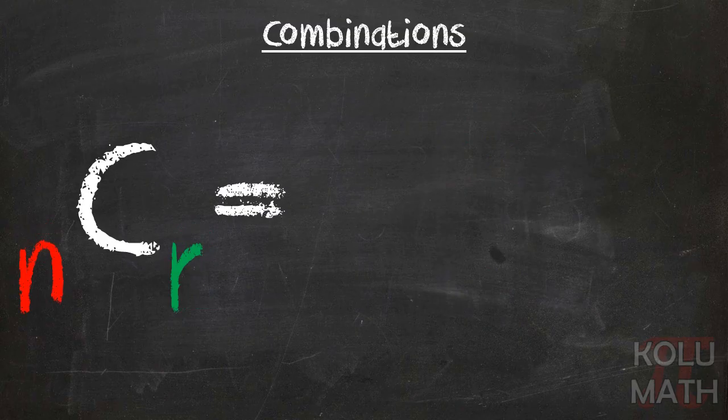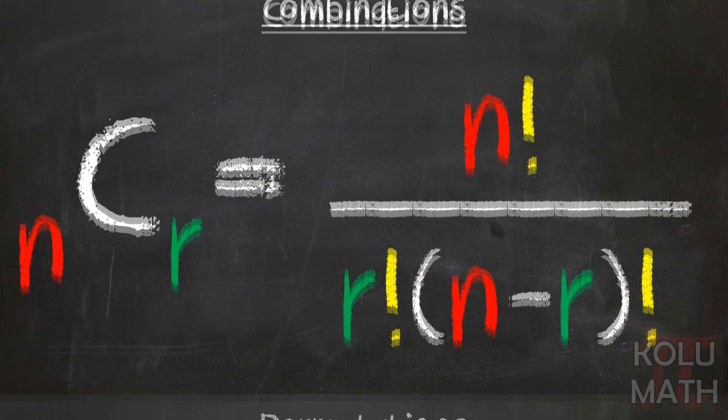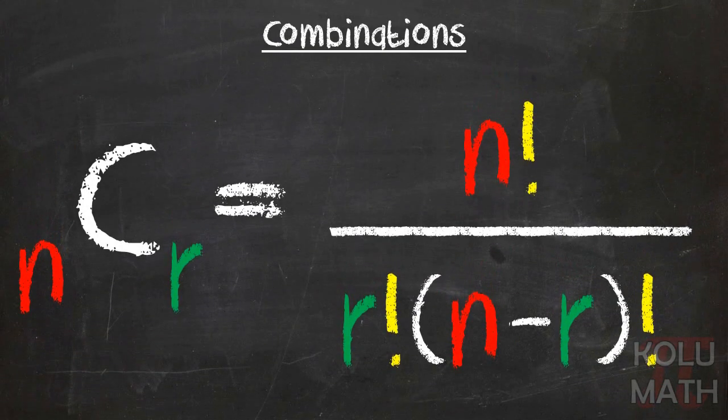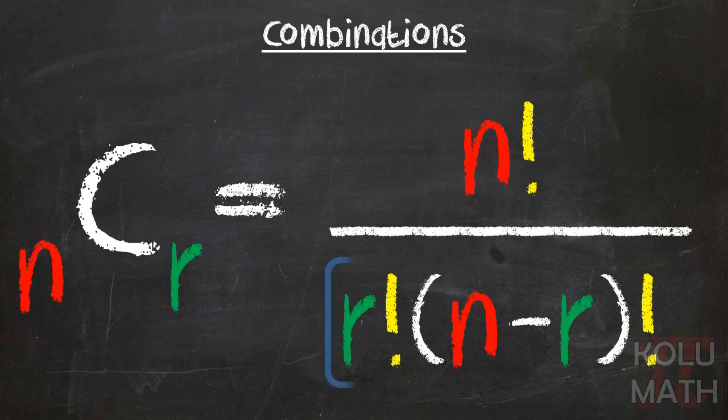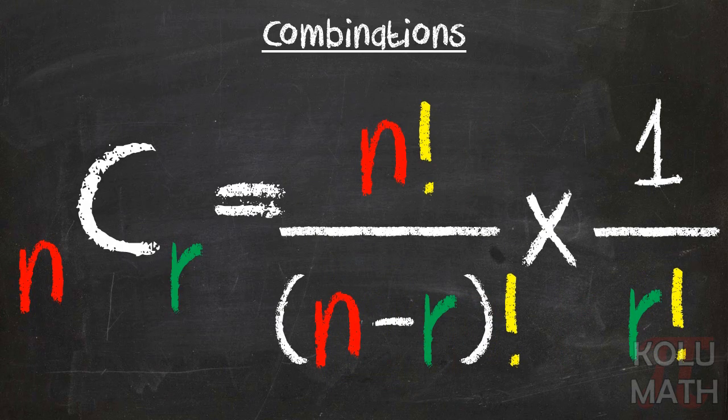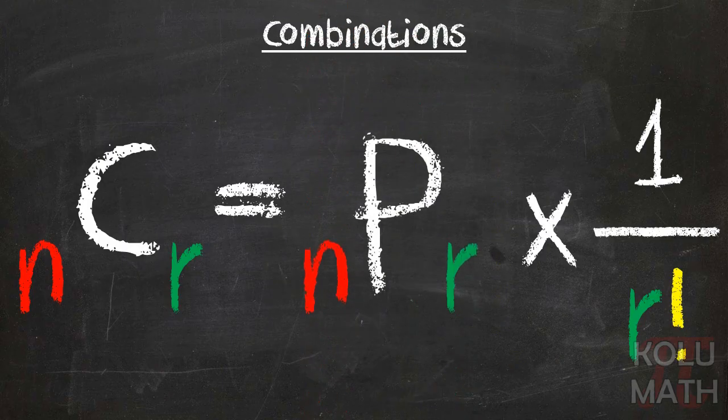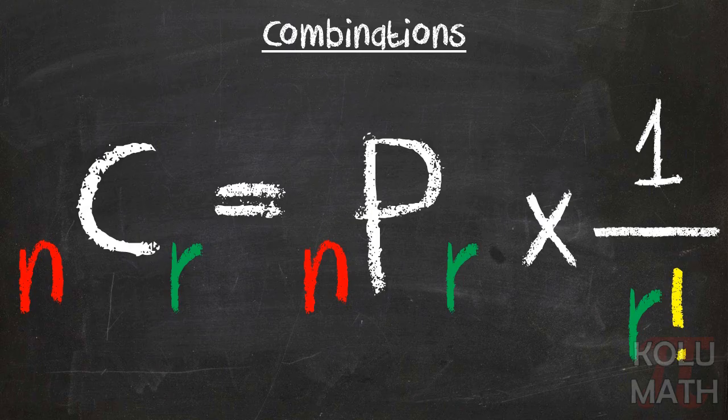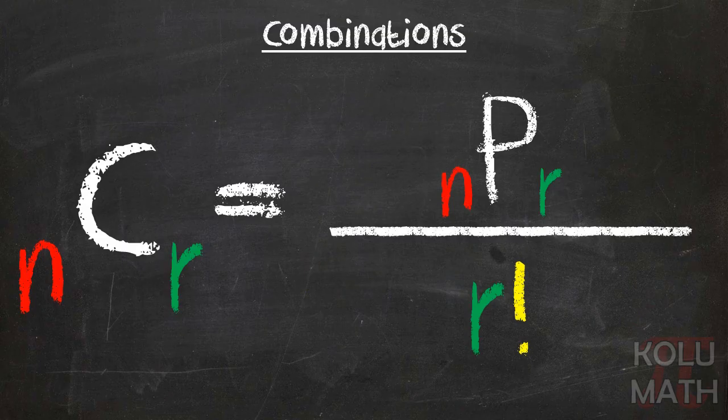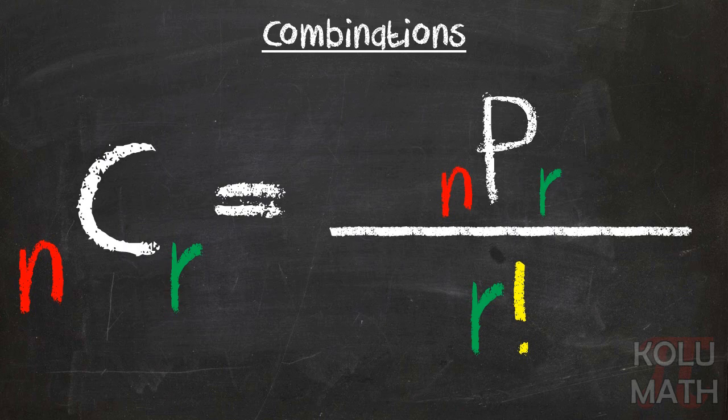When we're looking at that generic rule, that nCr, we notice that that formula looks really similar to the formula for permutations. And the only difference between them is the r factorial in the denominator. And if we factor out that r factorial into a separate fraction, we can actually replace the n factorial part of the equation there with nPr, multiply it by 1 over r factorial, and that gives us nPr over r factorial. The combination is really just a permutation divided by the number of objects selected as a factorial.